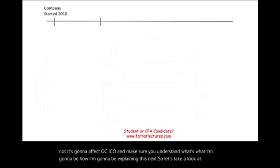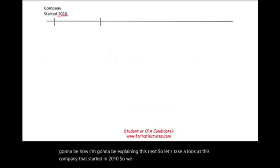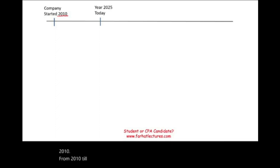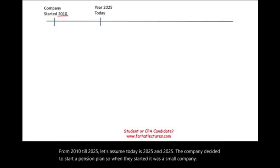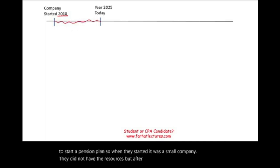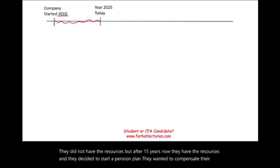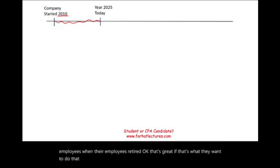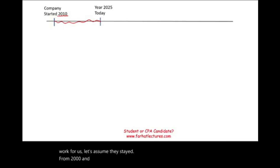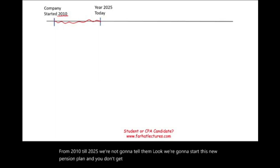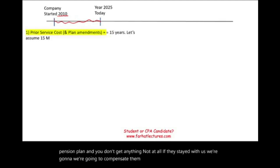Let's look at a company that started in 2010. From 2010 to 2025, when they started they were a small company without the resources, but after 15 years they decided to start a pension plan to compensate their employees when they retire. All employees who stayed from 2010 to 2025 won't be told they get nothing — they will be compensated. Therefore, what we call this is a prior service cost.